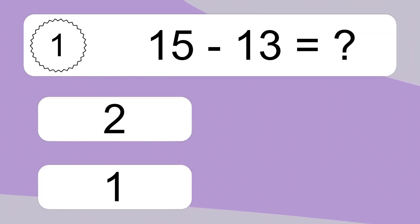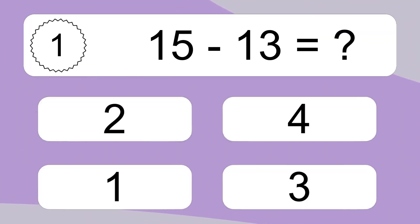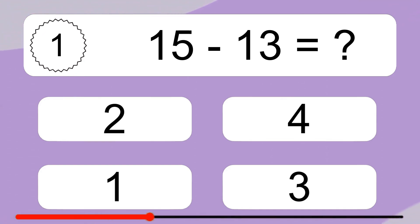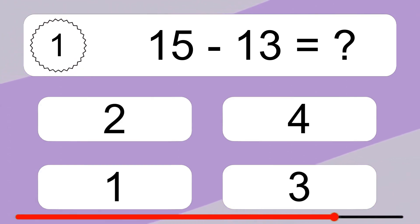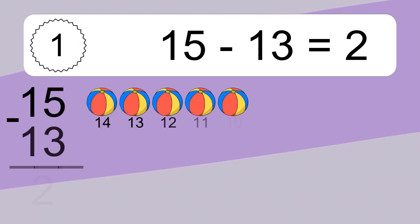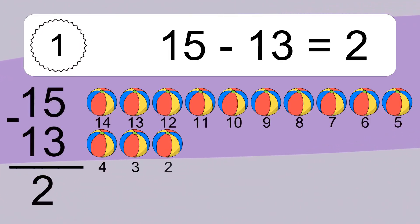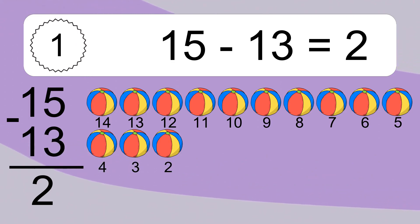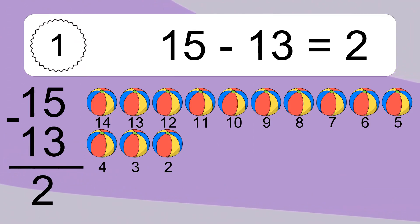15 minus 13 equals what? 15 minus 13 equals 2. Let's count it: 14, 13, 12, 11, 10, 9, 8, 7, 6, 5, 4, 3, 2.